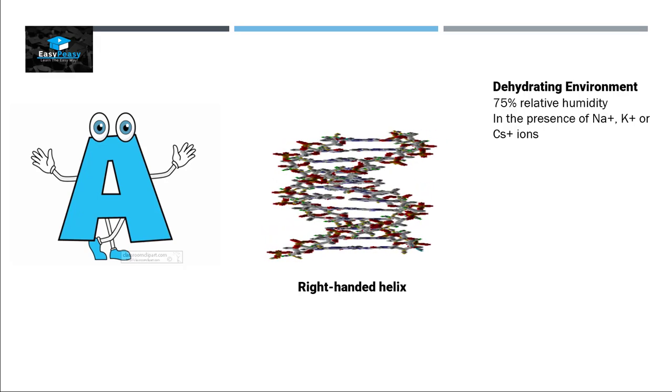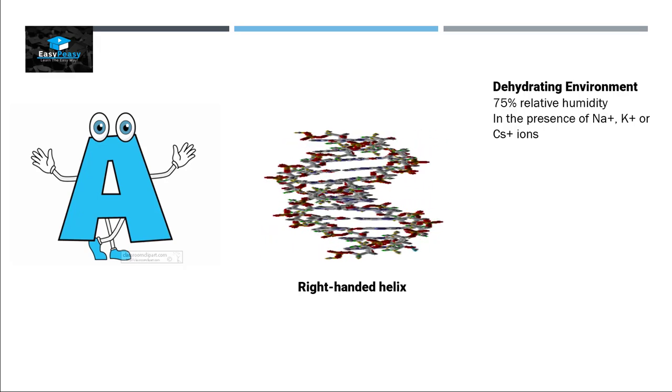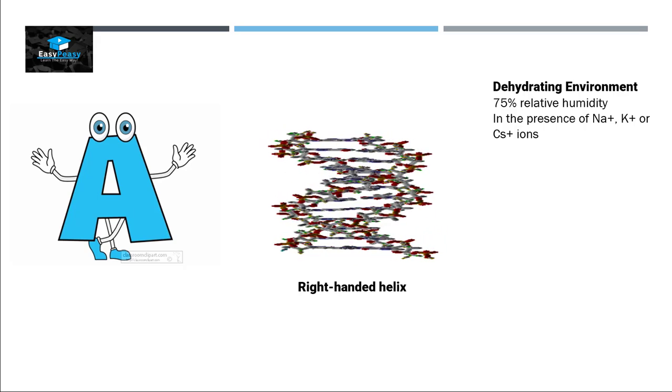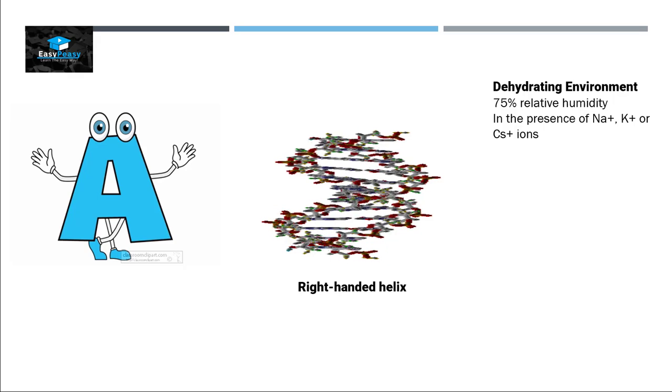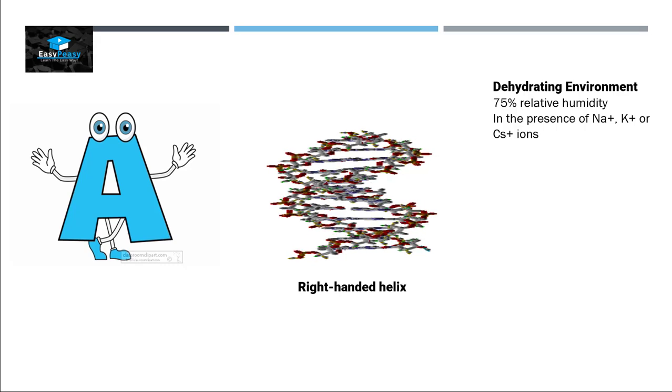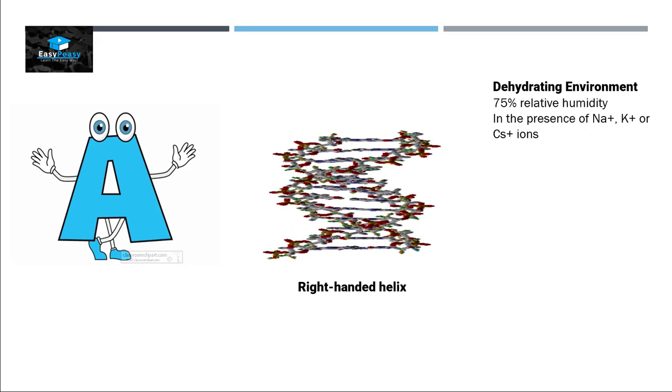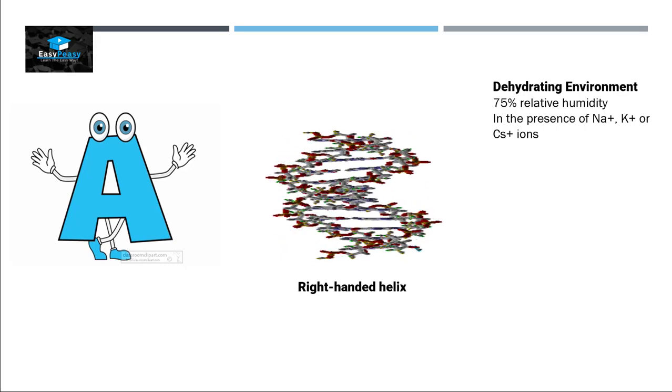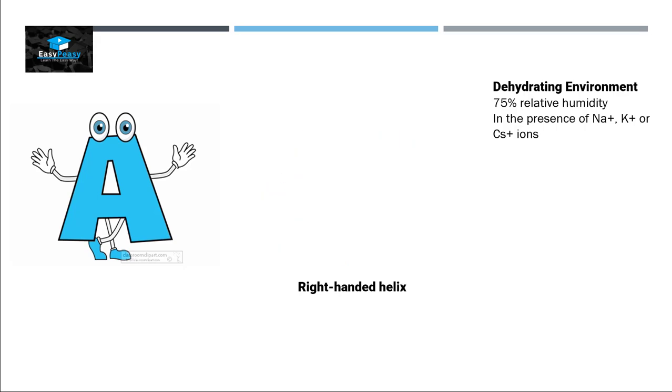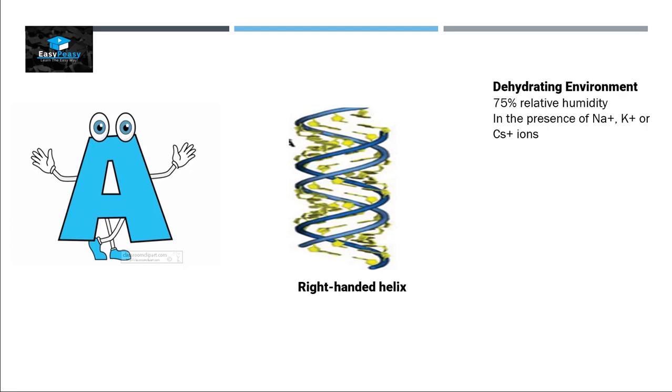The humidity will be approximately 75 percent and it is also present in high concentration of ions. This means that if a cell is facing a dehydrating environment, in order to survive, the B form can take the A form in that condition. The number of base pairs present in each turn in A form is approximately 11 base pairs instead of 10.